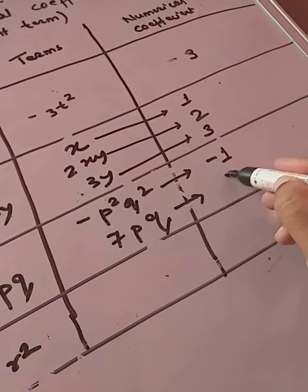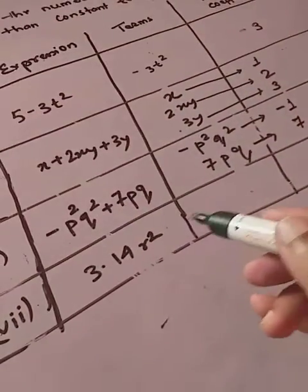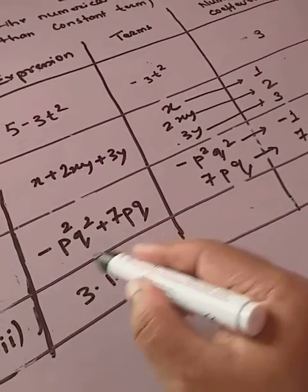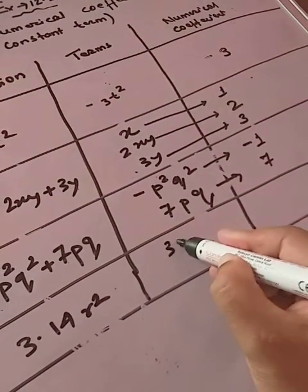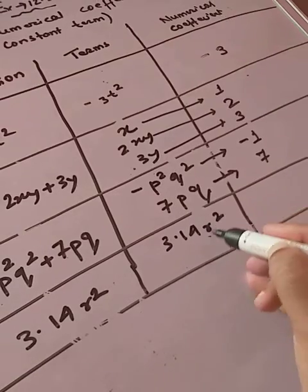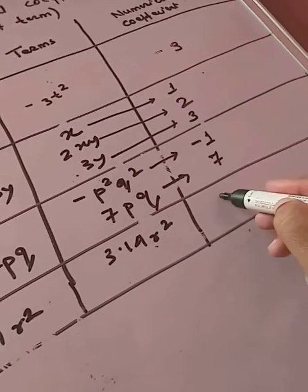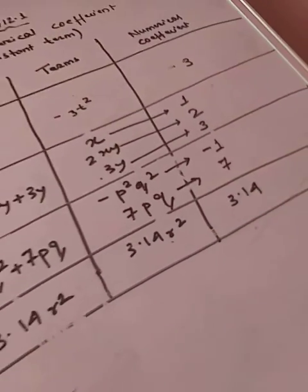And 7pq. 7pq means what is the numerical coefficient? Exactly, student. It is 7. Now, how many terms? Only 1. So, we will write only 1 term. That is 3.14r squared. So, what is the numerical coefficient out here? Very good. That is 3.14. So, this is how exactly you have to do question number 3.